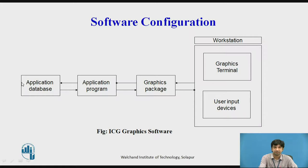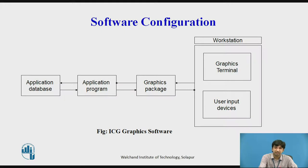The application database contains mathematical, logical, and numerical definitions of models such as electronic circuits, mechanical components, and automobile bodies. It also consists of alphanumeric information associated with the model, such as bill of materials and mass properties. The contents of the database can be readily displayed on the CRT or plotted out in a hardcopy format.